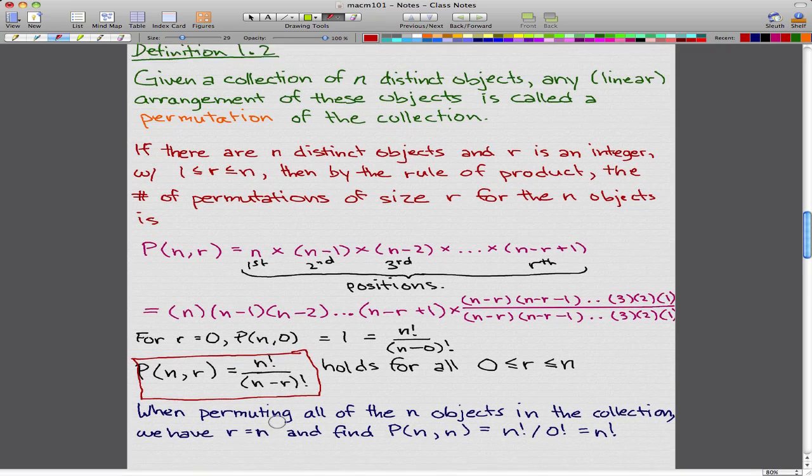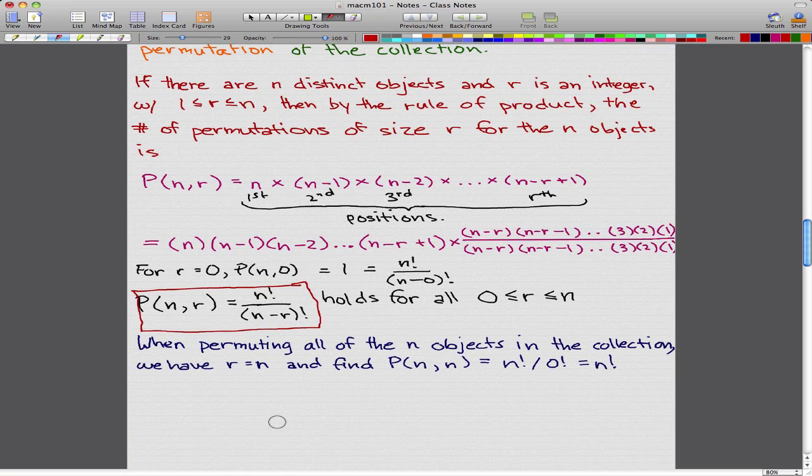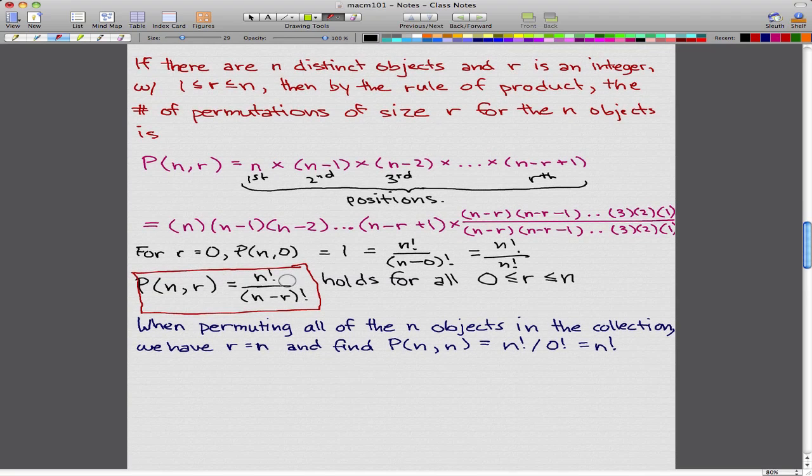Let's consider this example. Let's say that r, which represents the number of spots you have, is 0, and n is your distinct objects. P(n,0) = 1 because using this formula and plugging 0 into r, we have n!/(n-0)!, which is n!/n! = 1. Because there's 0 spots to put all our cards in, there's really only that one way of arranging whatever you want to arrange. That's a simple example of how we use this formula.